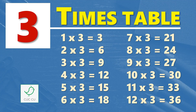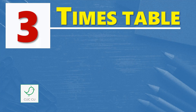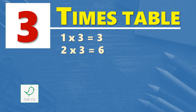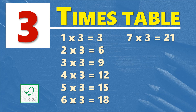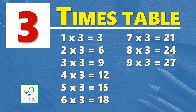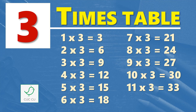Multiplication table of three. Three times table. One times three is three, two times three is six, three times three is nine, four times three is twelve, five times three is fifteen, six times three is eighteen, seven times three is twenty-one, eight times three is twenty-four, nine times three is twenty-seven, ten times three is thirty, eleven times three is thirty-three, twelve times three is thirty-six.